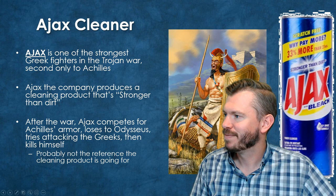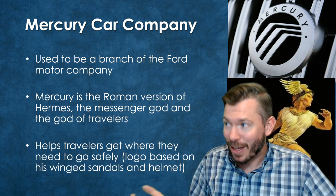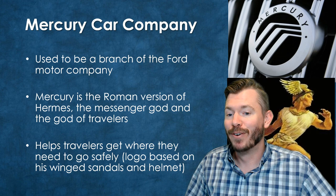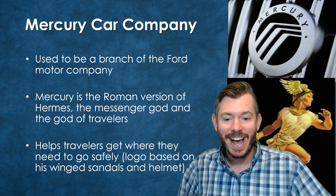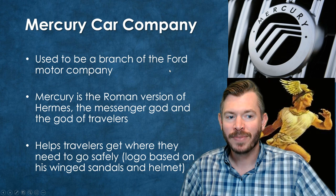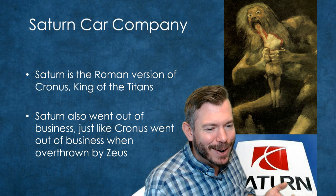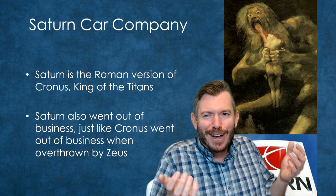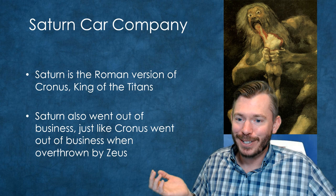We've got a couple of car companies, and the lesson you'll find here is don't name your car company after Greek or Roman mythology. The Mercury car company — used to be a branch of Ford — is named after Mercury, the messenger god. You can kind of see the relationship: gets you places quickly, helps travelers on the road. The logo was supposed to allude to the wings on the sandals or helmet. Mercury doesn't exist anymore. We've also got the Saturn car company — it's the car for if you want to eat your babies, I guess. And the company gets overthrown, just like Cronus does. Don't name your car company after a mythological figure.